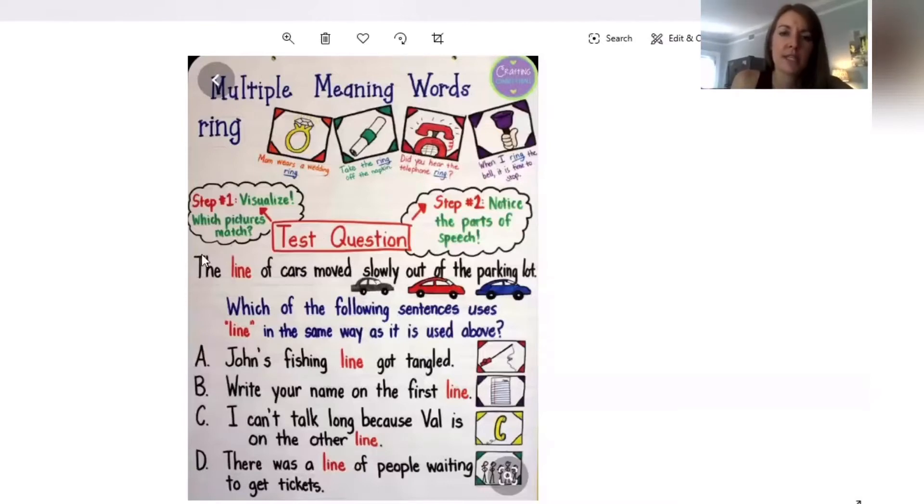Okay, really quickly we're going to go over this test strategy that's similar to your cold read, and then I'm going to go into your cold read. Here's an example: it says the line of cars moved slowly out of the parking lot. So the first thing that we can do is visualize and picture what does the line of cars look like? In here there's a picture of three cars all in a row, one in front of the other. So we're going to figure out that this line of cars means lined up next to each other or in a row.